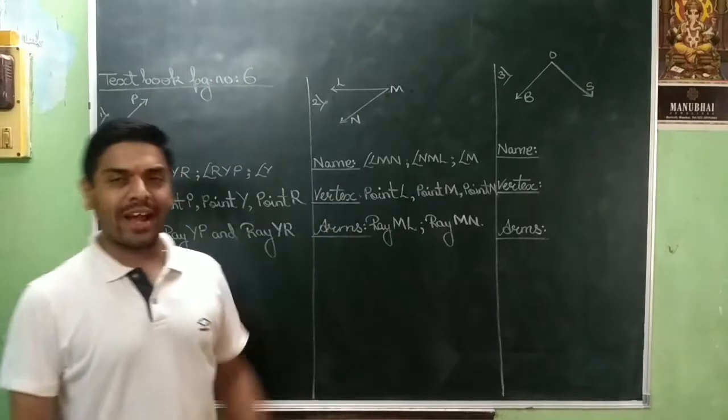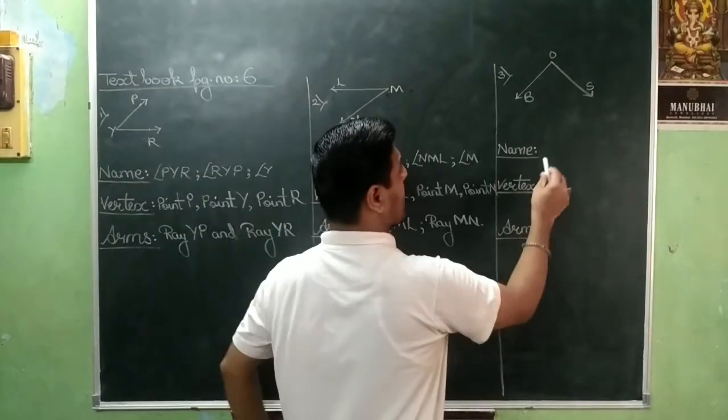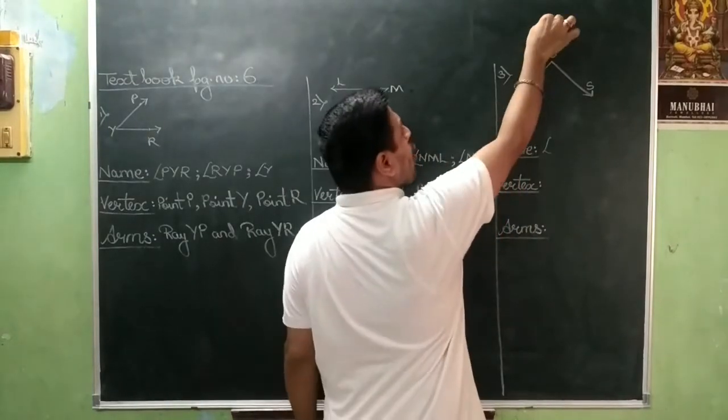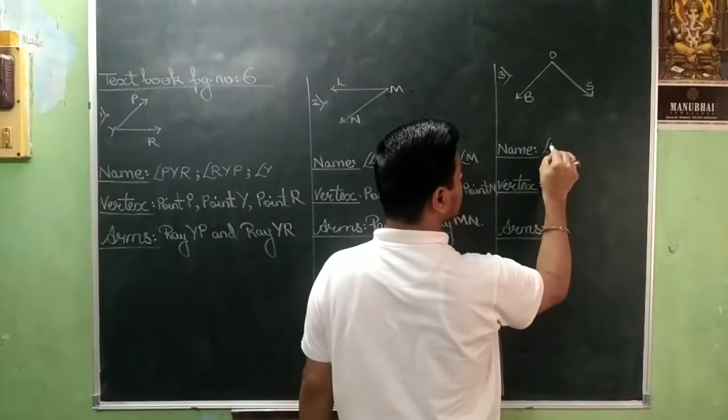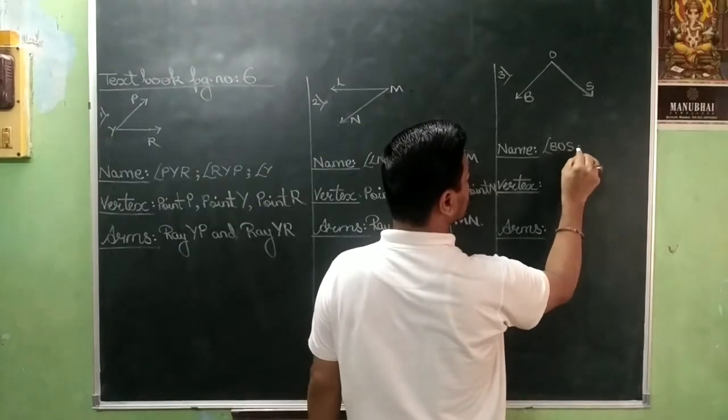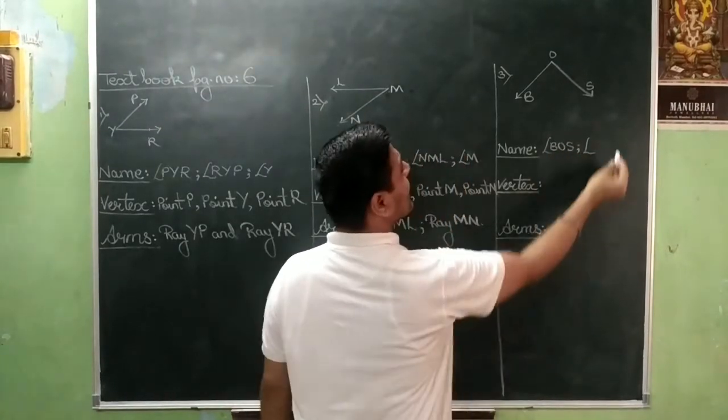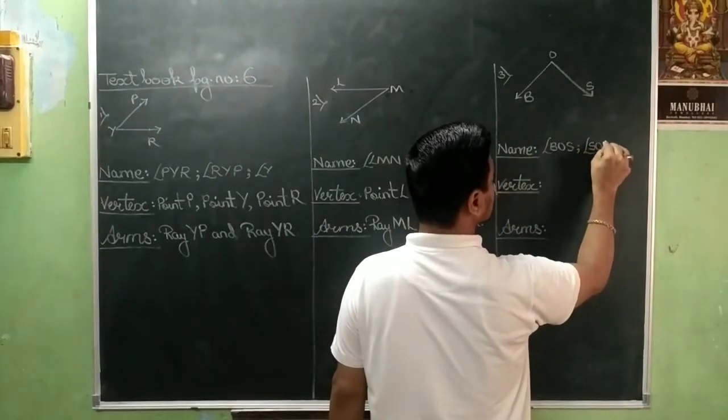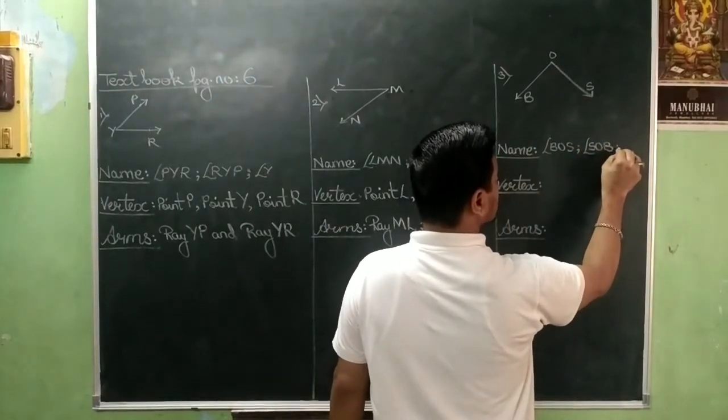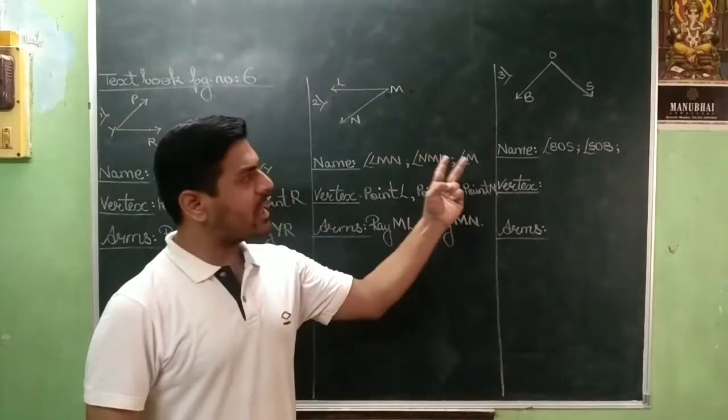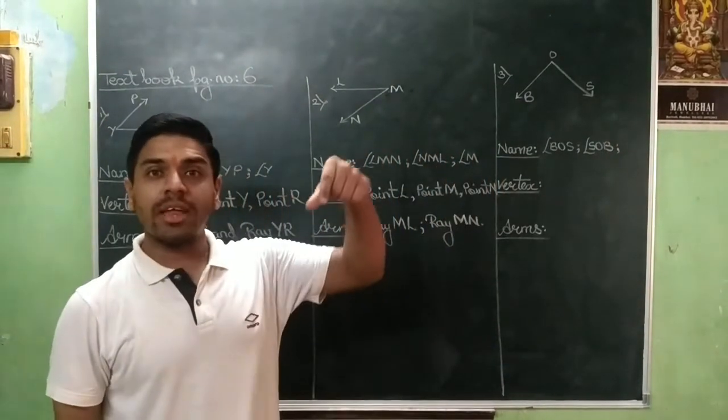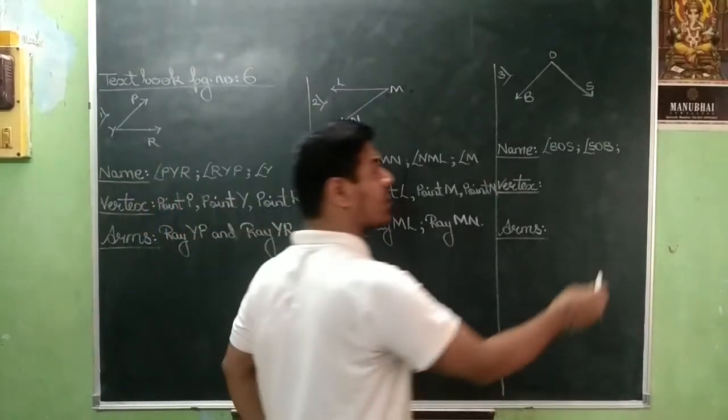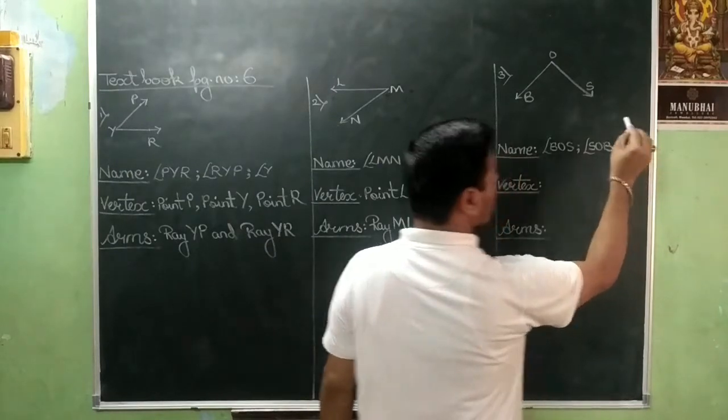And the third and the final figure is like this. Nailed it. So that is angle B, O, S. Angle S, O, B. Now, once again, between these two naming, which alphabet is in between? That is letter O. So you will be writing here, angle O. Correct?